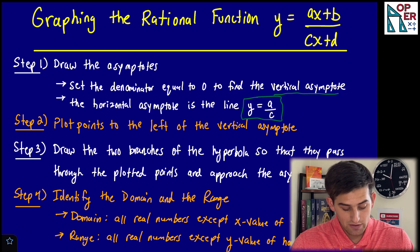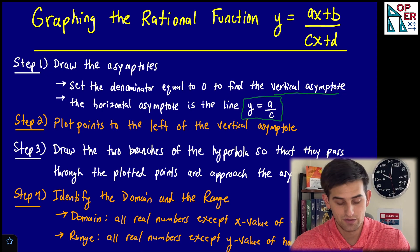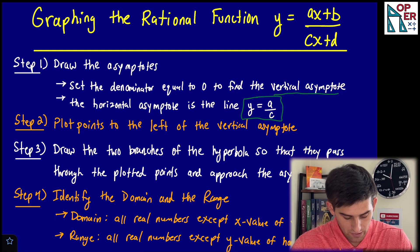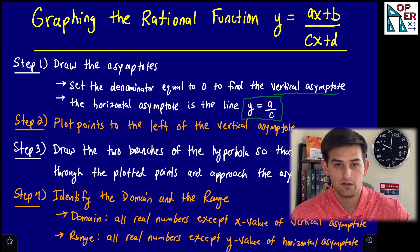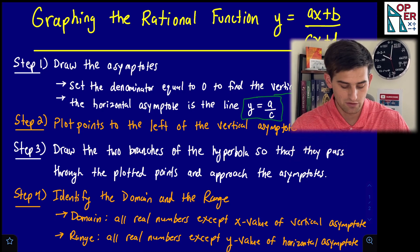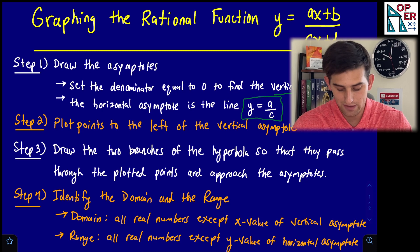Step two: once we have those two asymptotes, we're going to plot points to the left of the vertical asymptote and also to the right of the vertical asymptote. Step three: once we have those points, we're going to draw the two branches of the hyperbola so that they pass through the plotted points and approach the asymptotes.